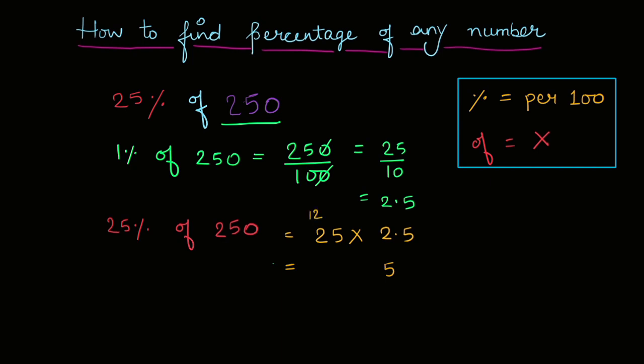And twenty-five into two, fifty. Fifty plus twelve, sixty-two. Now there is a point. So ab main point ko place karna hai. So after one digit, we will place a point. So this is your answer. Twenty-five percent of two hundred fifty is nothing but sixty-two point five.